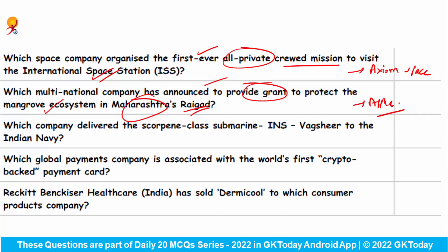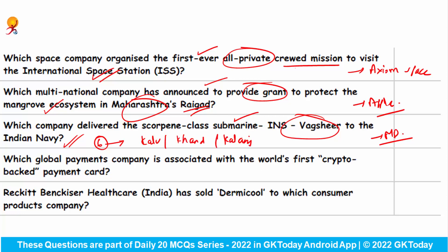Which company delivered the Scorpene class submarine INS Vagsheer to the Indian Navy? This is Mazagon Dock Shipbuilders Limited. In total, six submarines come under this project: INS Kalvari, INS Khanderi, INS Karanj, INS Vela, INS Vagir which is still under trials, and sixth is INS Vagsheer. Which global payments company is associated with the world's first crypto-backed payment card? This is Mastercard.